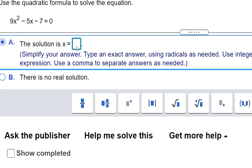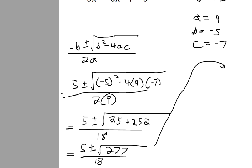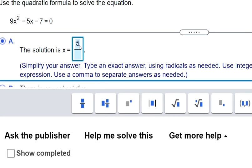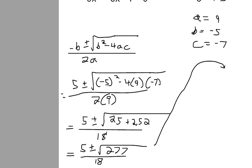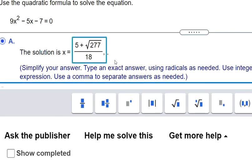So we got a fraction. Our answer was 5 plus or minus. So we're going to do 5 plus the square root of 277 first. And then it was divided by 18. So I'm going to use my right arrows to get out of there and put divide 18 in the bottom. That's one of them. So you use your right arrows to get out of the fraction. Put a comma.